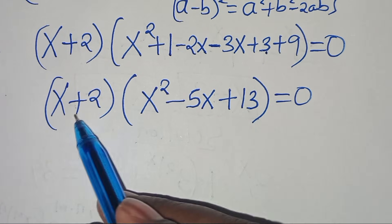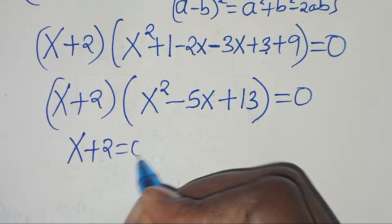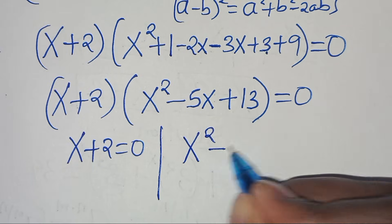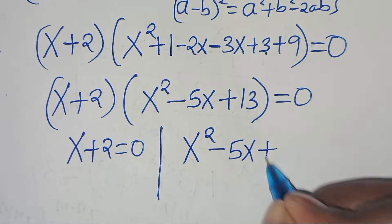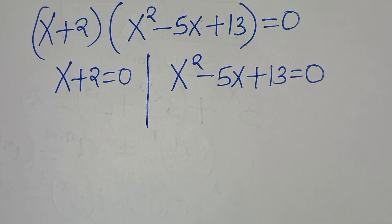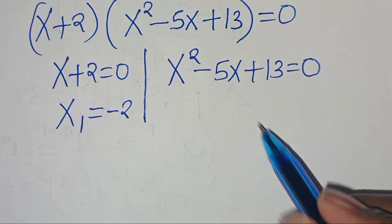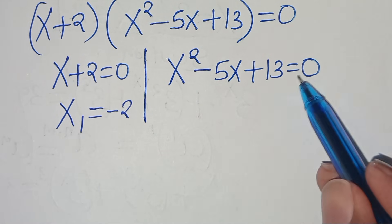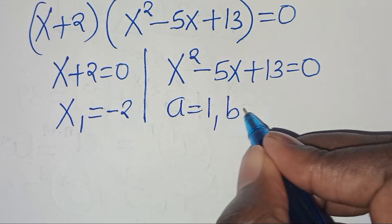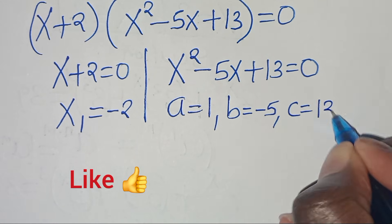We now have two parts: the first part is x plus 2 equals 0, and the second part is the quadratic equation x^2 minus 5x plus 13 equals 0. From the first part, x1 equals minus 2. For the quadratic, a equals 1, b equals minus 5, and c equals 13.